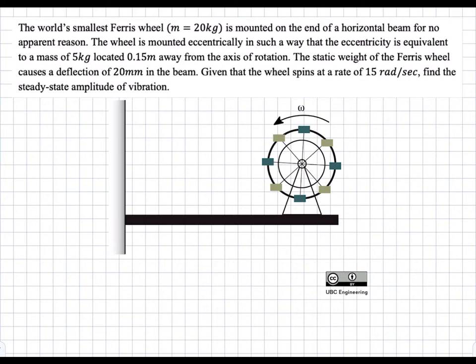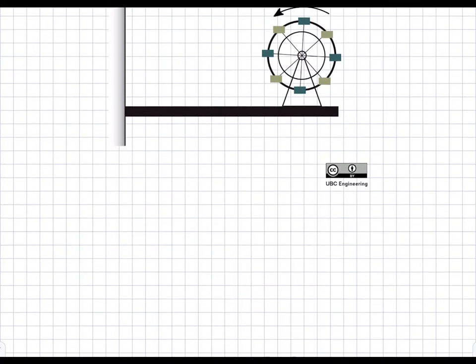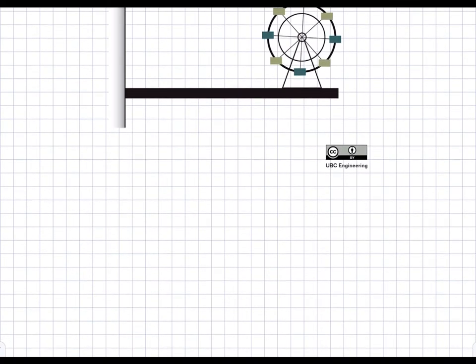This problem deals with a sinusoidally forced vibration of a simple mass and spring system. So even though there's no spring in this system, a beam — when you apply a deflection to it you're applying a force and it travels a set distance — which means that it acts like a spring. So you can imagine this system as just being a 1D system with a mass, a spring, and a force F applied to it.